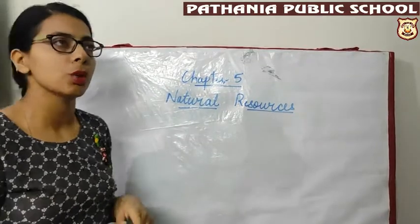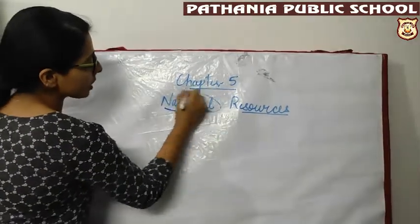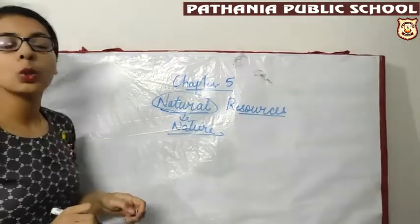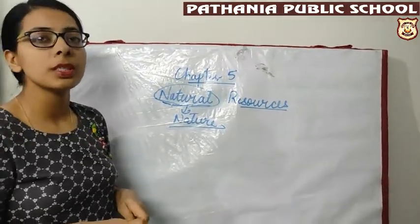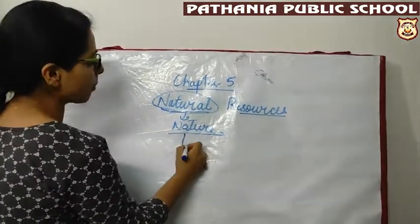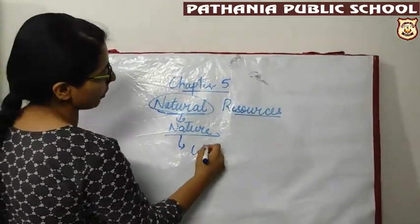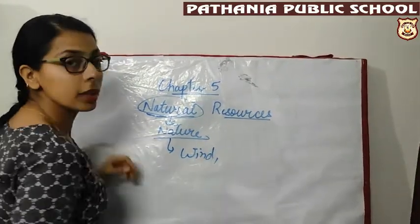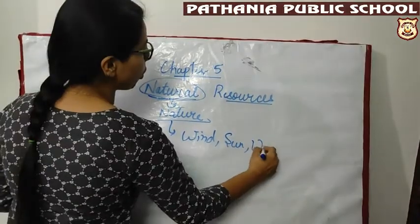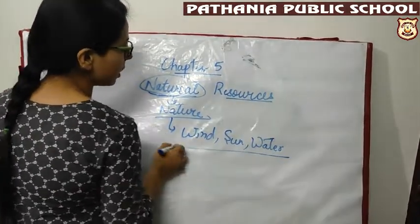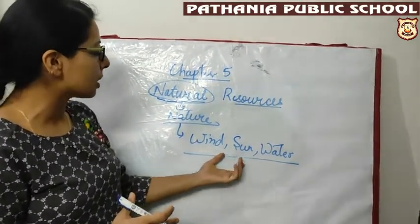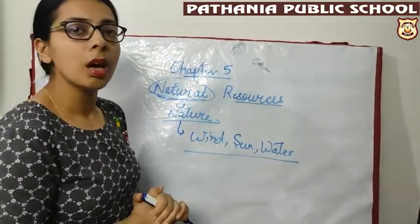The word 'natural' comes from 'nature'. So any thing that we get from nature is called a natural resource. For example, wind, air, sunlight, water — all of these come from nature. These are examples of natural resources.